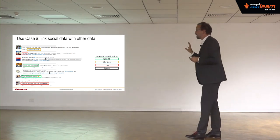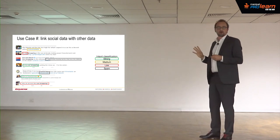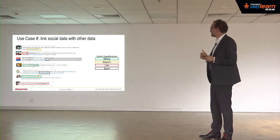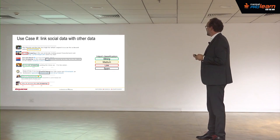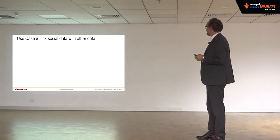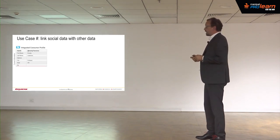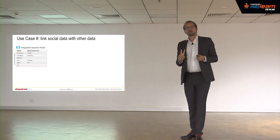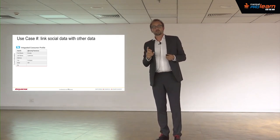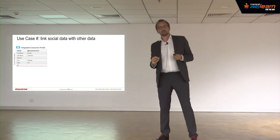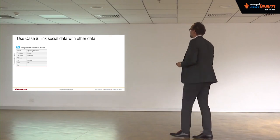That was the easy part of the process. It's actually very simple to classify using algorithms based on unstructured data. After that comes the way we link people — and while it looks very simple, it's not as simple as it looks.